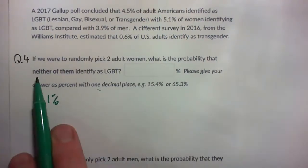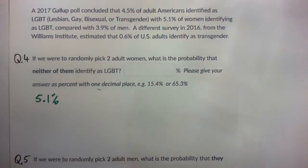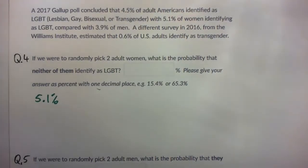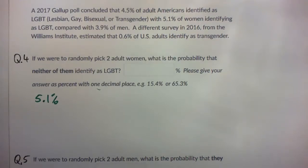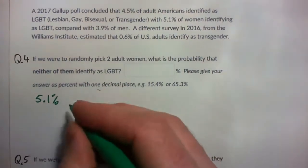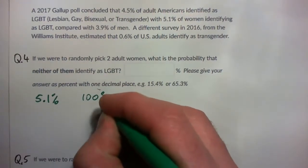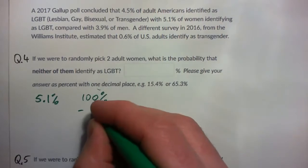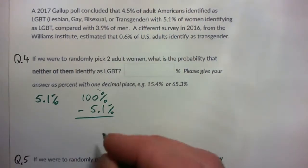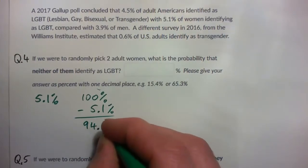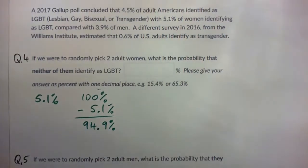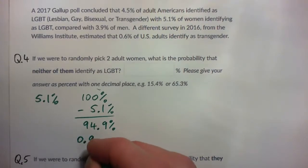What's the probability that neither of them identify? First, what's the probability that one of them does not identify as LGBT? The probability that one of them does not identify is 100% minus 5.1%, which is 94.9%, or 0.949.